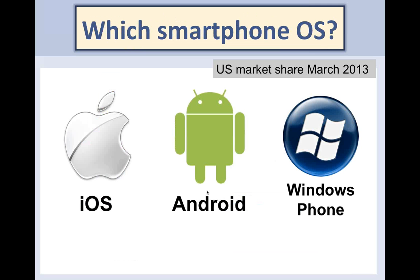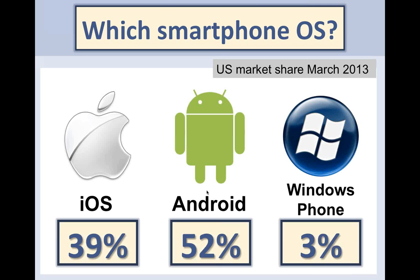If you're going to get a smartphone, which one would you likely have? Based on a March 2013 study, Android is the dominant platform. Windows Phone is there and growing a little. iOS is in second place with almost 40% of users. Some of these apps work on multiple devices, some only work on one or the other. BlackBerry is another one — I didn't see many mapping apps for it, but it seemed like Android, iOS, and Windows were the three markets most used for mapping.